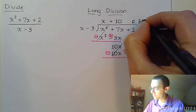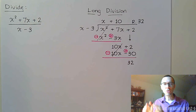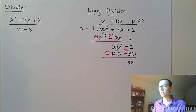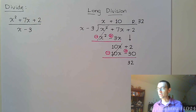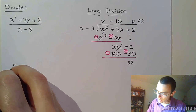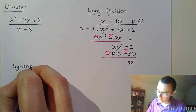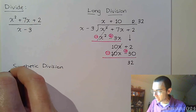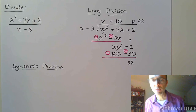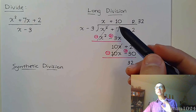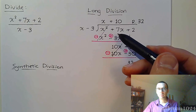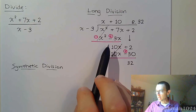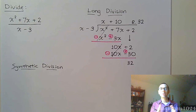So you get x plus 10 with a remainder of 32. We're going to hold off on writing that full answer for just a second, because this really isn't good enough in terms of how we write an answer from division with polynomials. That's long division — now let's see what synthetic division looks like. With synthetic division it does all the same stuff as long division, except it eliminates all of the variable pieces. All you're going to see are the coefficients and the signs, and all the changing of signs is eliminated at the very beginning.